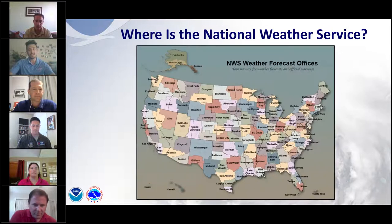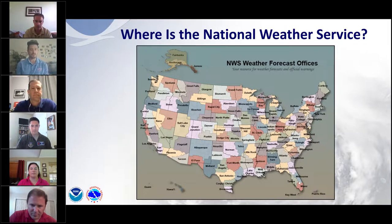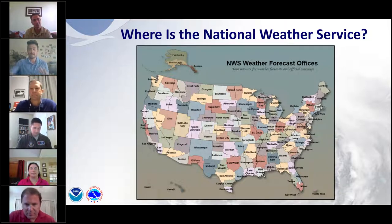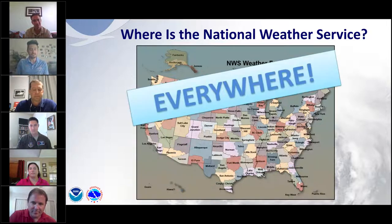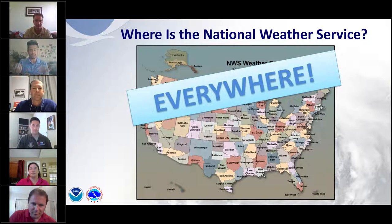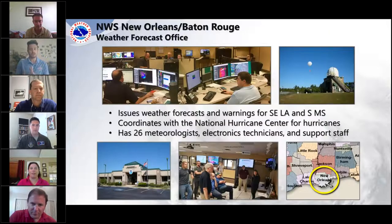The National Hurricane Center is part of the National Weather Service, part of the federal government. Where is the National Weather Service? The Hurricane Center is in Miami, but the Weather Service is actually everywhere — there is a local National Weather Service office that forecasts the weather in your neighborhood. That's the type of office that Danielle works at. I'll pass it to her to talk about the office in Slidell.